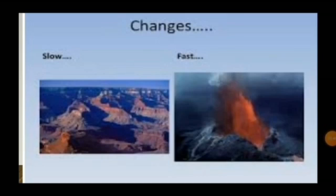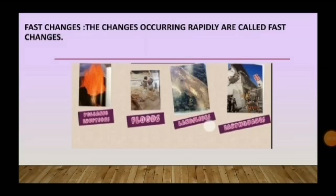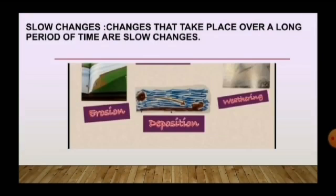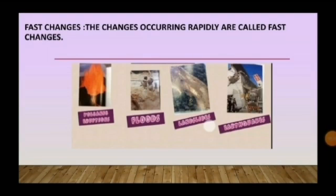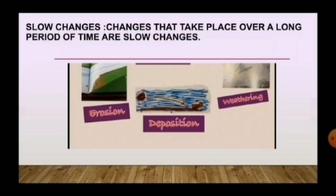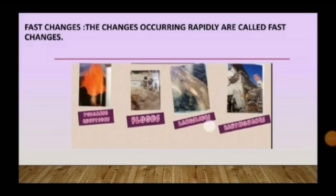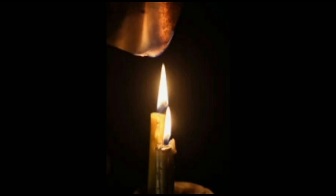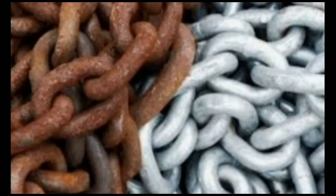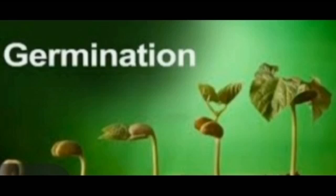Fast and slow changes: the changes occurring rapidly are called fast changes, while the changes that take place over a long period of time are called slow changes. The duration of the bursting of a balloon is far shorter than that of the ripening of a fruit. Fast changes occur within a second or minute, whereas slow changes may take hours, days, or months to complete. Examples of fast changes: burning of paper, burning of a candle. Examples of slow changes: rusting of iron, germination of seeds, curdling of milk.